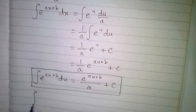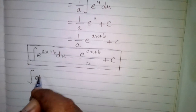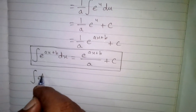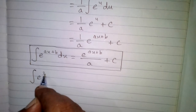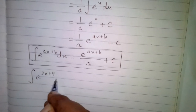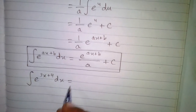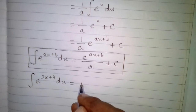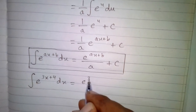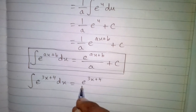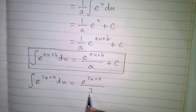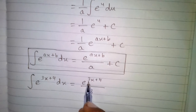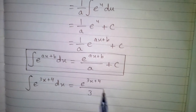We can apply this formula on a question. We have to find the integral of e to the power 3x plus 4 with respect to x. So the integral of e to the power 3x plus 4 is equal to e to the power 3x plus 4 upon 3, which is the coefficient of x, or the derivative of this linear factor, plus c.